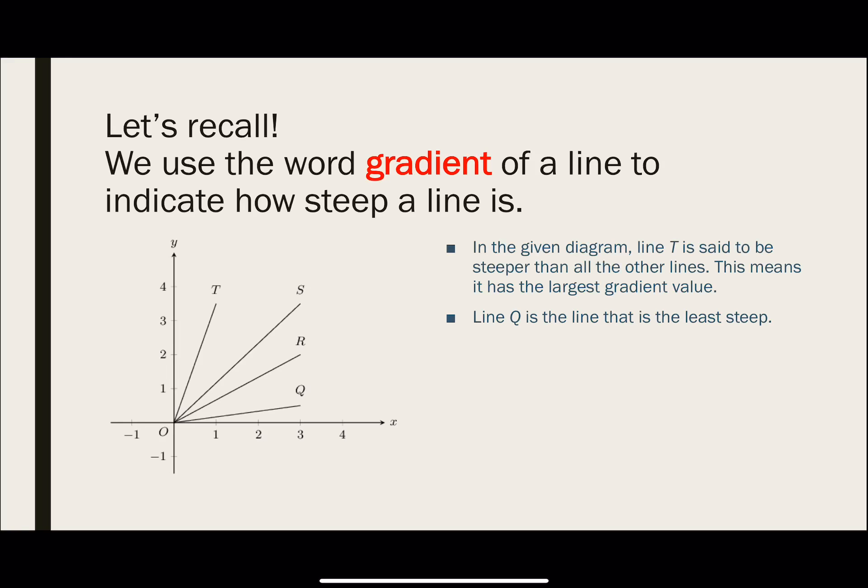Line Q is the line that is the least steep. So you can see that it's right at the bottom, it's least steep. So I will ask you a question: suppose you were asked to choose one of the lines to walk on, which line would make it easiest for you? Now I hope you have actually chosen line Q, because it is actually the least steep line, so it's the easiest that you will walk on. It's less steep.